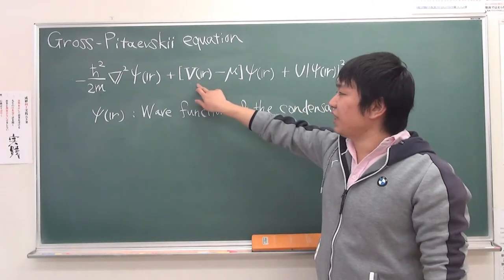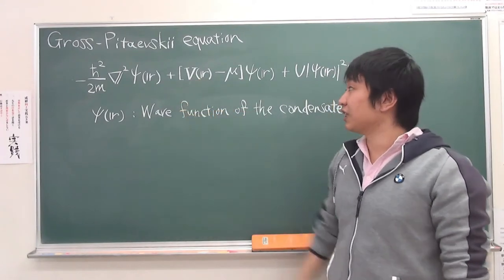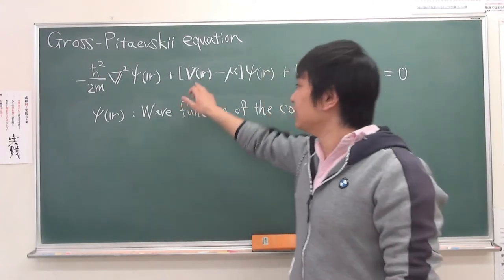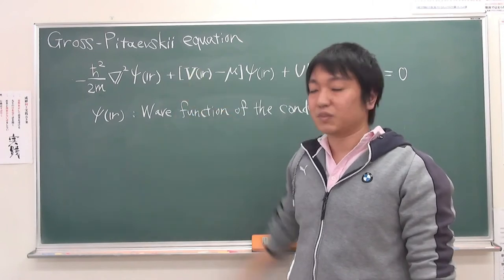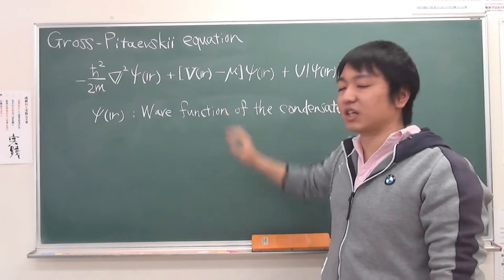V is the single particle potential. In the case of ultra-cold atoms, this is just the trap potential, and mu is the chemical potential.